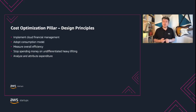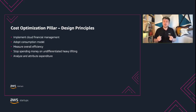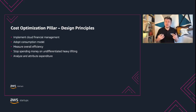What are those? The first is implement cloud financial management — your company must dedicate time and resources to building the capability to become a cost-effective organization. The second is adopt a consumption model, meaning pay only for the computing resources you consume. The third is measure overall efficiency — you should measure the business output of the workload and the cost associated with delivery.